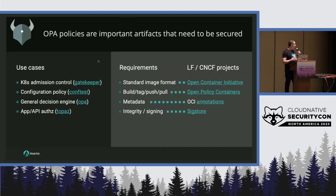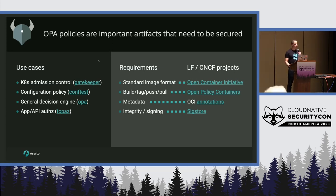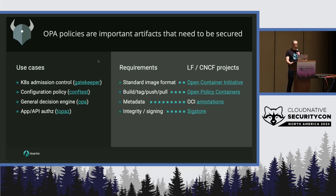OPA policies are becoming important application lifecycle artifacts, and as such, they need to be secured. They're used in Kubernetes admission control, ConfTest — which is applying policy for configuration files — and you can use OPA as a general decision engine that you can embed into your application. You can also use it for app and API authorization, like with Topaz.